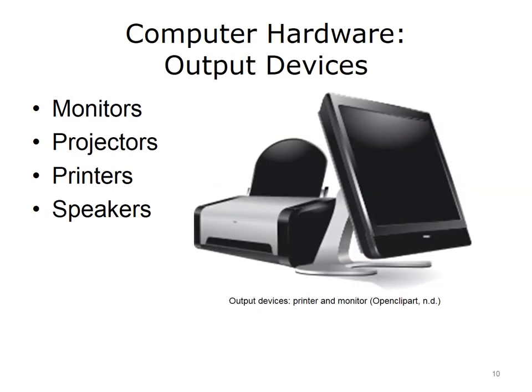Output devices display or provide output of some task performed by a computer. When you use a personal computer, you are continually providing input through your keyboard and mouse, and the resulting actions are displayed on your computer monitor. When you're typing a document in Microsoft Word, for example, each keystroke results in a character appearing on your monitor. Similarly, if you are projecting output from your computer instead of using a monitor, the output would appear projected onto a screen or wall. Printers are another way to get output from your computer. Speakers provide sound output, including the beeps and clicks that confirm that input was received, and can also be the sound from videos or music being played on a computer.